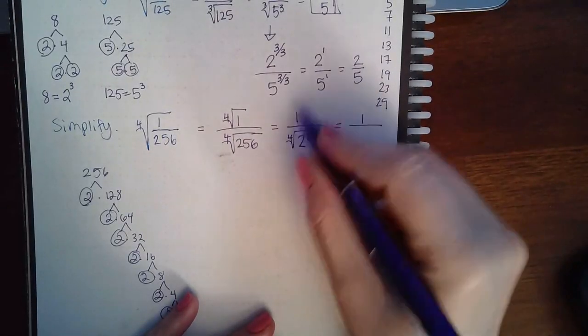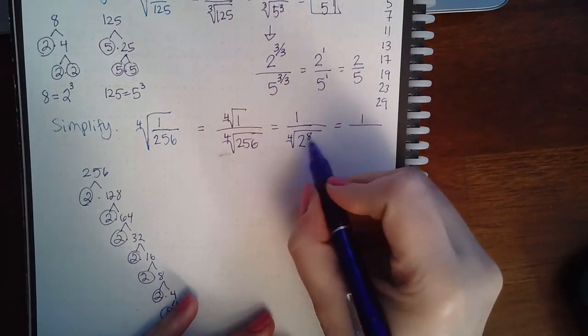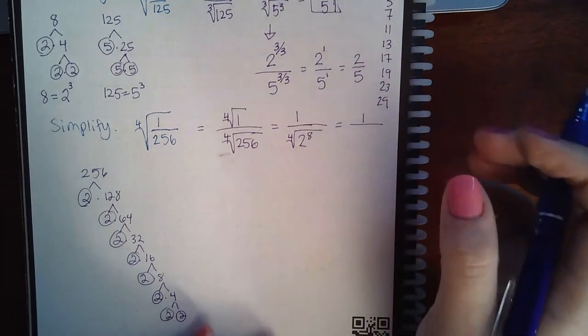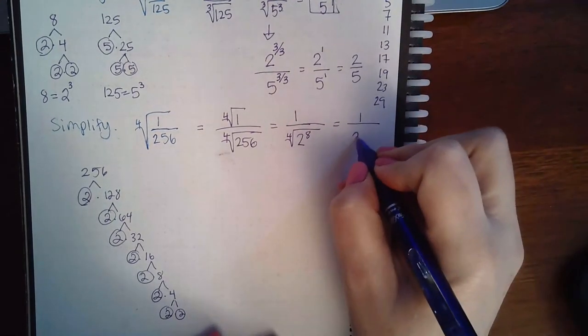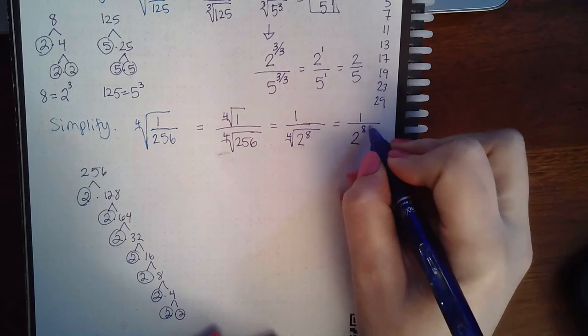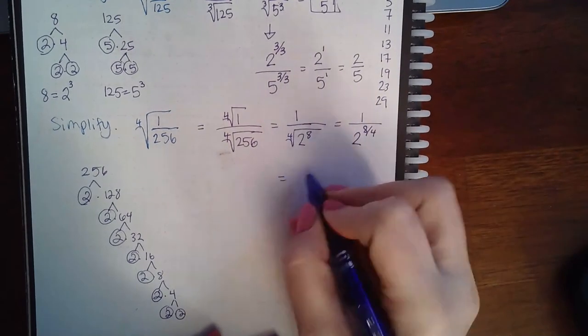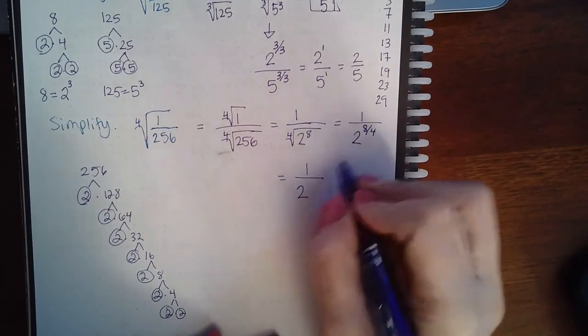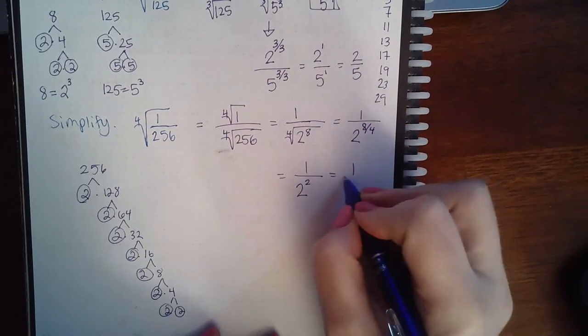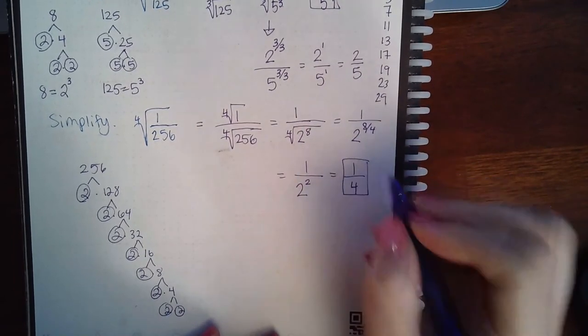If I use that power rule again, because here they don't cancel - 4 and 8 are not the same. So if I use that rule and it says the exponent over the index, we get 2 to the eighth over 4, and this reduces to 2 to the second, which is 4. And so you get 1 over 4.